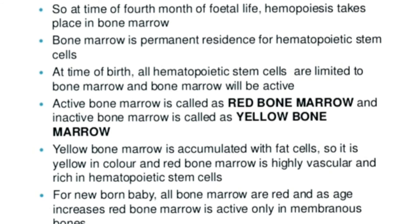The bone marrow is the permanent residence for these stem cells. At the time of birth, all hematopoietic stem cells are limited to the bone marrow. Active bone marrow is called red bone marrow, and inactive bone marrow is called yellow bone marrow. The red bone marrow becomes the primary site of hemopoiesis.